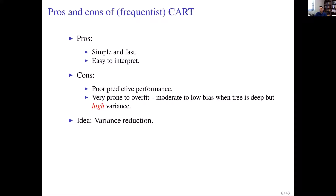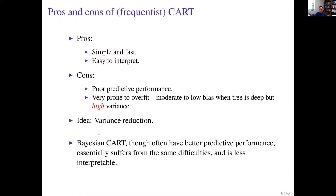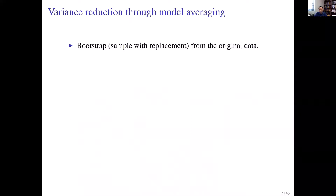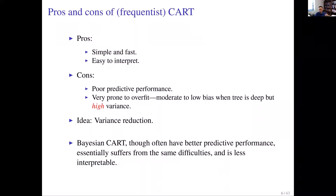Because of these limitations, a couple of ensemble methods were proposed with the idea of reducing the variance of the CART model. Bayesian CART might give slightly better predictive performance than frequentist CART, but the overfitting issue remains. Also, because you're sampling a bunch of trees, you lose some of the interpretability that a single greedy tree provides — though you can partially address that by finding a representative tree from the stochastic search.